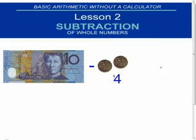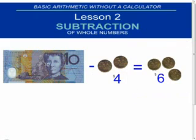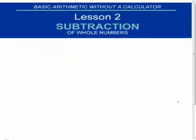$10 minus $4 and I would have $6 left after that. So, $10 minus $4 equals $6. And that's basically what subtraction is about.